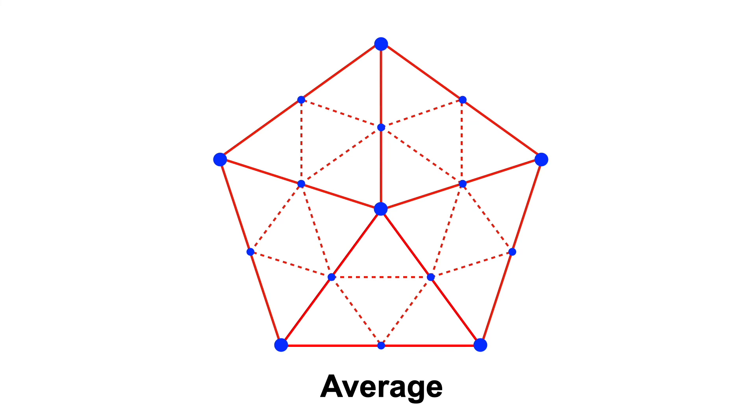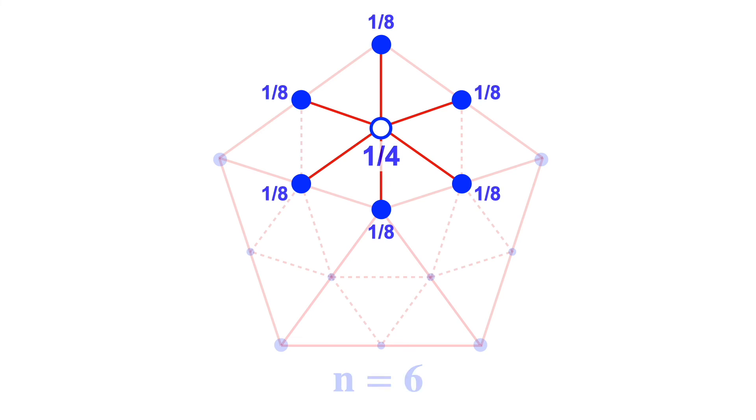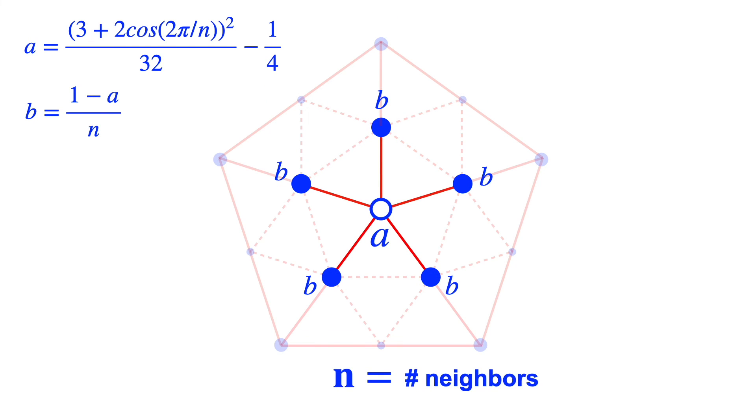But mesh vertices can have different numbers of neighbors. For example, this vertex has 5 neighbors. And this vertex has 6. The averaging weights are pretty simple for the 6 neighbor case. And the vast majority of vertices will be like this. And here's the general formula that you can use for vertices with different numbers of neighbors.